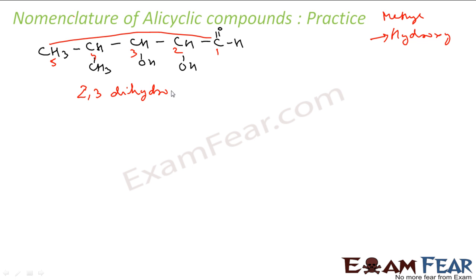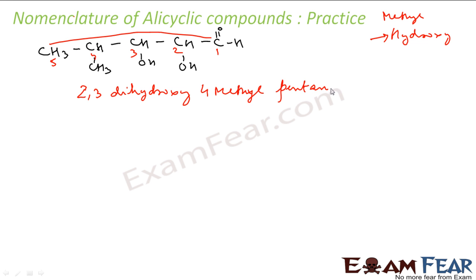Why dihydroxy? Because there are two hydroxy groups. Then 4-methyl. Then I have five carbons, so pent — all single bonds — and as an aldehyde group, pentanal. So it is 2,3-dihydroxy-4-methylpentanal.